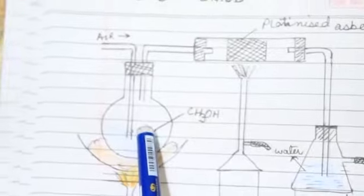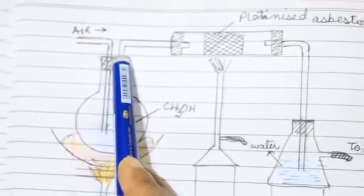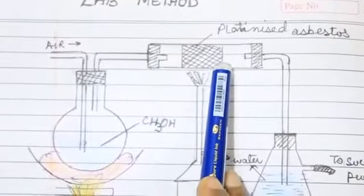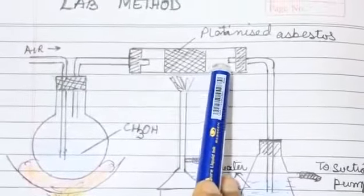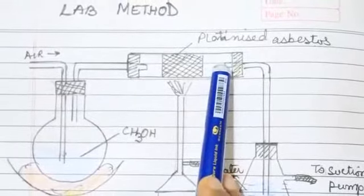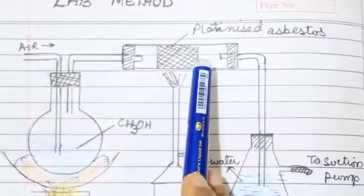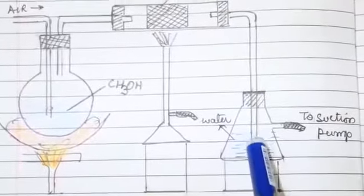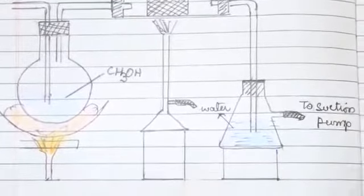It changes into gas. When this gas passes through the delivery tube, it passes through platinized asbestos which acts as catalyst. Then the gas catalyzes and again changes into liquid.